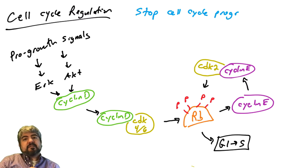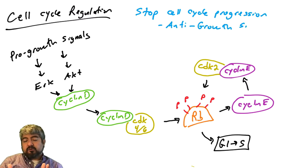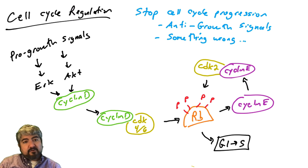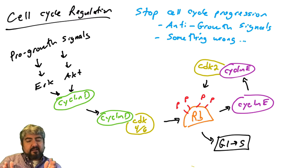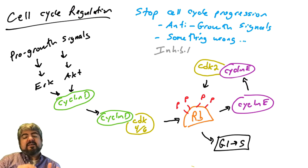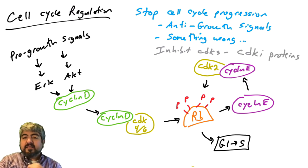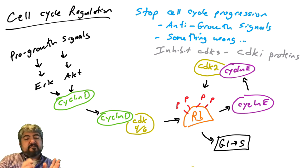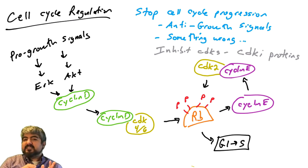Sometimes a cell wants to stop cell cycle progression — maybe there are anti-growth signals indicating we don't need more cells, or something is wrong, such as DNA damage. Anti-growth signals can trigger the production of proteins that inhibit cyclin-dependent kinases. This family of proteins is called CDKIs or CDK inhibitors, and it's very important to understand how they work because they are commonly dysregulated in virtually all human cancers.